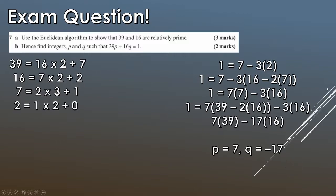And there we have it — that's the chapter done for Bézout's identity. It is very brief, just a follow-on from the Euclidean algorithm, and I didn't want to make the video too long as it's an introduction. I have more questions on my channel for Bézout's identity and number theory in general, so check those out if you need more practice. If anything is unclear, please leave a comment below.